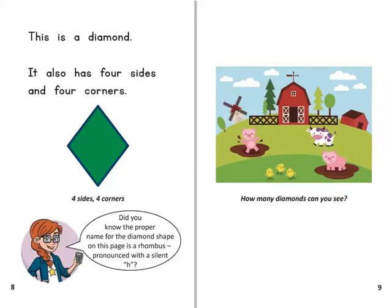This is a diamond. It also has four sides and four corners. Did you know the proper name for the diamond shape on this page is a rhombus, pronounced with a silent h?